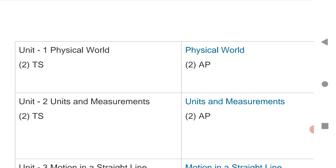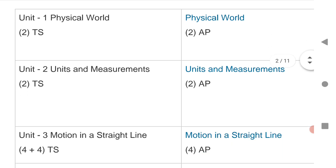For first chapter, that is the first unit, physical world, for Telangana two marks and AP two marks. Second chapter, units of measurement, two marks for both the states TS and AP.